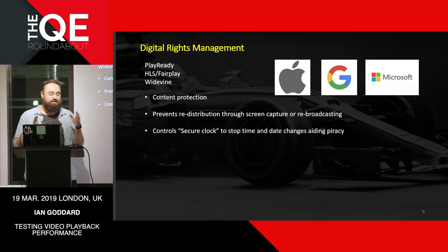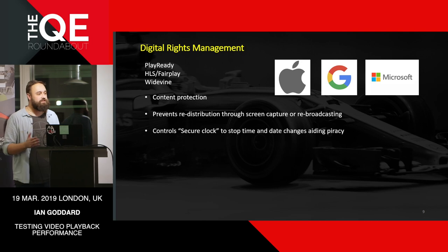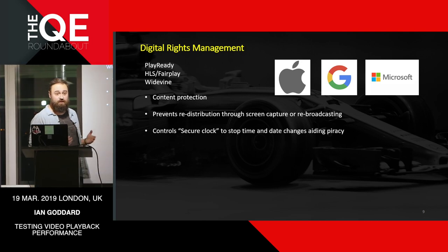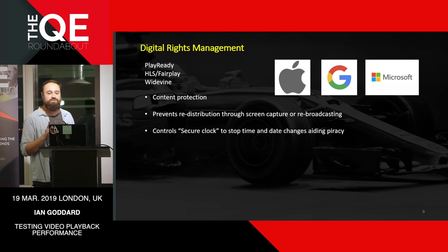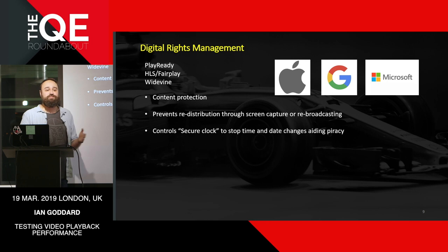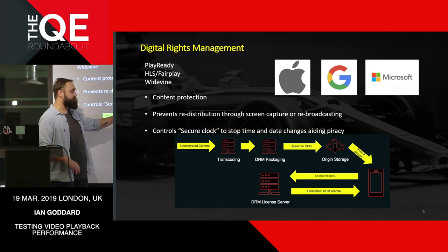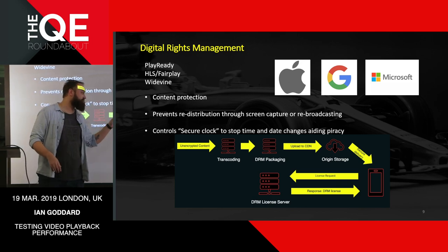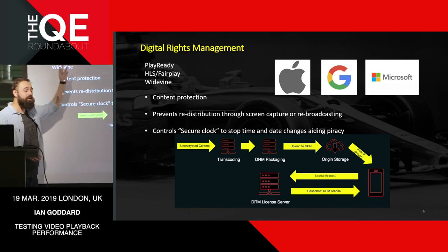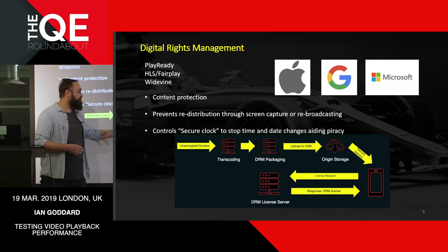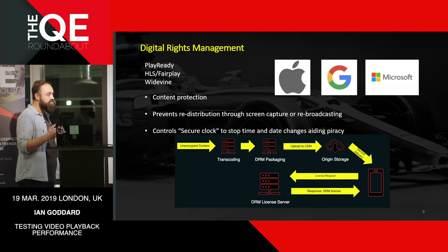DRM also controls what's called the secure clock. This is very important because some people previously tried to change the clock on their computer to get around 24-hour distribution policies. DRM sets its own clock — it doesn't care what you've got on your computer. From the minute you get the content, it has 24 hours from its own secure clock. The unencrypted content flows through transcoding, packaging DRM, and origin server to your device, which then contacts the appropriate DRM server to confirm you're authorised to view that content.